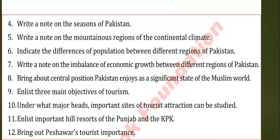Next question: List three main objectives of tourism. The answer is on page 55. Tourism serves three main purposes or objectives: number one, rest and recreation; number two, attainment of knowledge and information; number three, recreation. Next question: Under what major headings can the important types of tourist attractions be categorized? Pakistan offers an enormous variety of tourist attractions. Tourist attractions in Pakistan can be divided into three main categories: number one, architectural features; number two, historical buildings; number three, health and recreation resources.